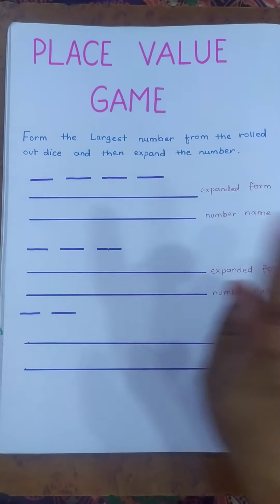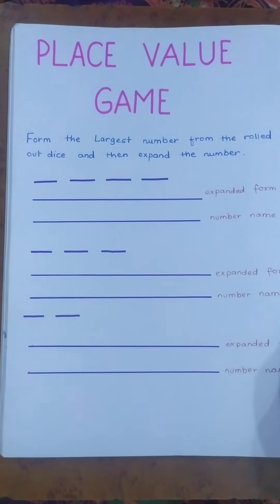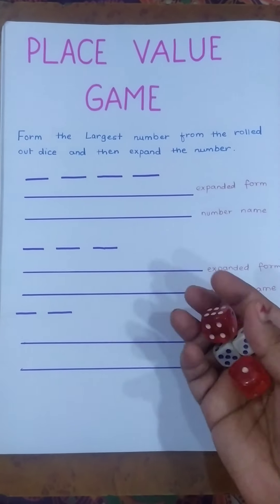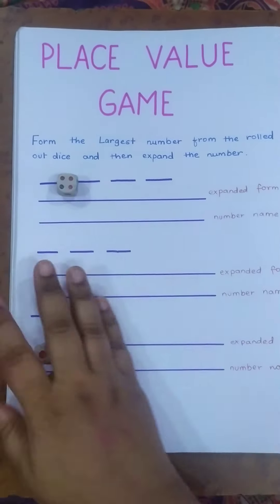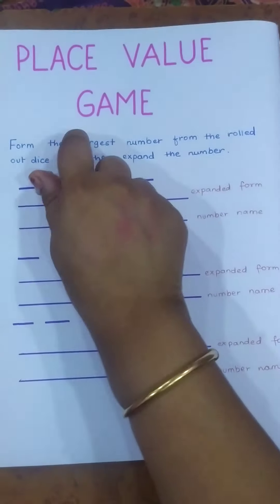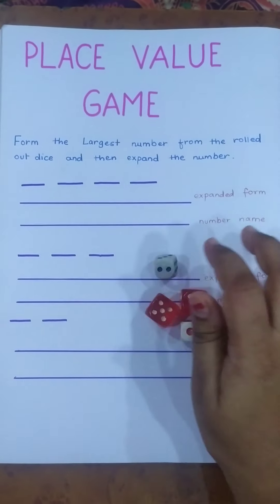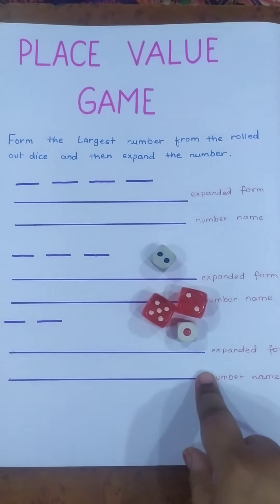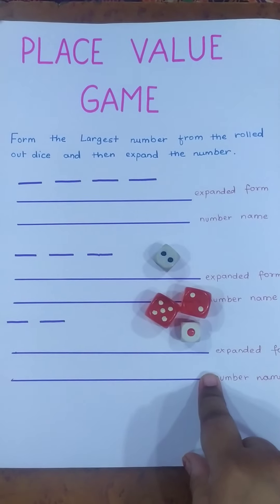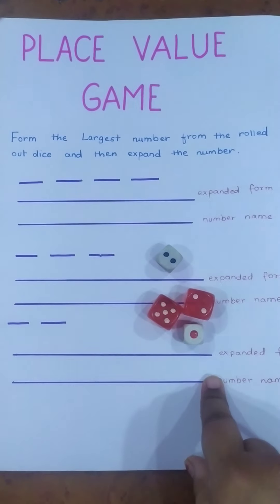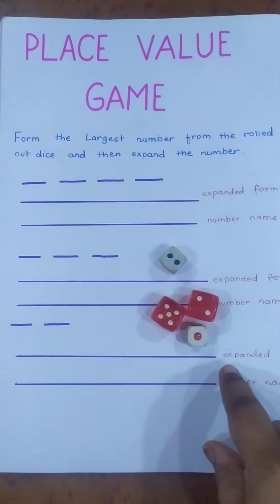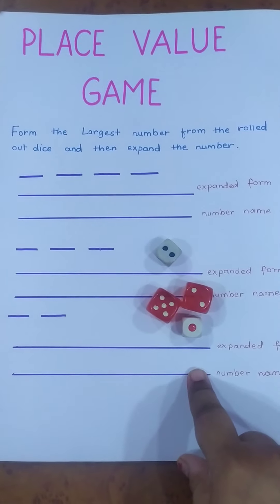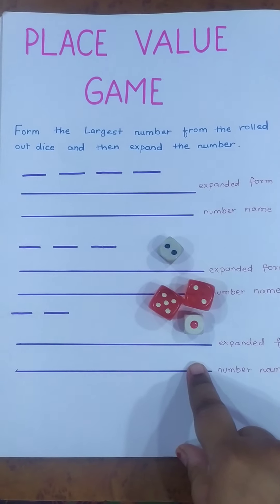Now what you have to do is give the child the dice and tell the child to roll the dice. After rolling the dice, you have to tell the child to form the largest number from it. After doing this, the child has to expand the number and then write the number name.